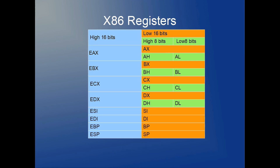Here is a table that graphically represents these registers. Each register is 32 bits — each row represents the full 32 bits. The sky blue portion represents the high 16 bits, and the orange portion represents the low 16 bits, which is a sub-register corresponding to the bottom half of the 32-bit register.